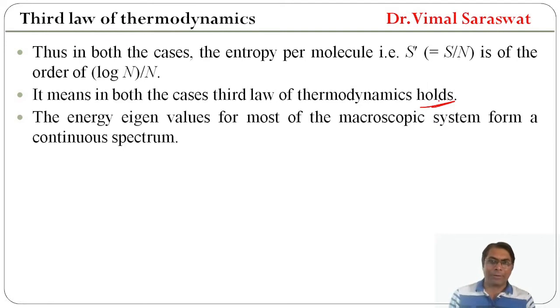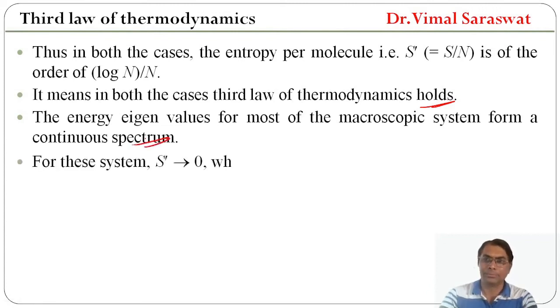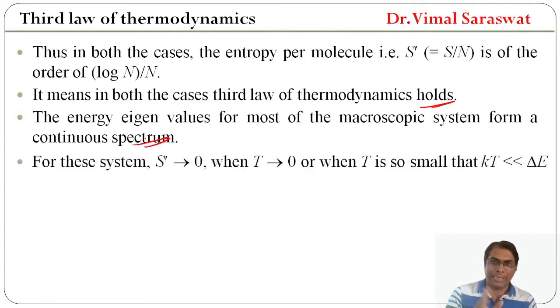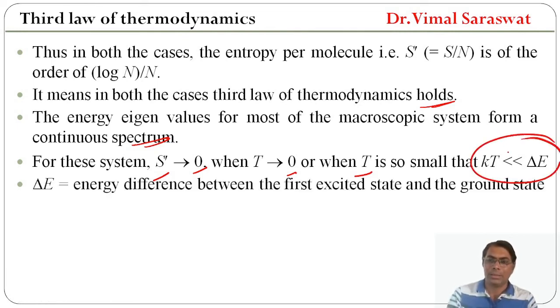The energy eigenvalues for most macroscopic systems form a continuous spectrum. For these systems, the entropy per molecule S prime turns to zero when T turns to zero, or when temperature is so small that kT is very much less than delta E. Here, delta E is the energy difference between the first excited state and the ground state.